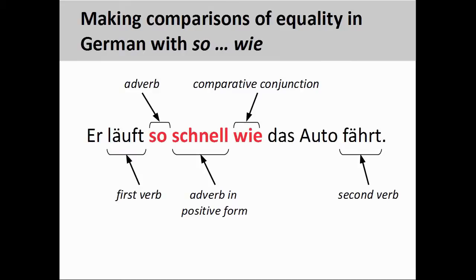We can also compare similarities between activity. In the sentence 'er läuft so schnell wie das Auto fährt' — he runs as fast as the car drives — it is not the nouns that are being compared, but rather the speed with which they move. We can still use the same 'so...wie' construction, but in this case an adverb in the positive form, 'schnell', is inserted after the adverb 'so' and before the conjunction 'wie', which introduces the comparative clause.